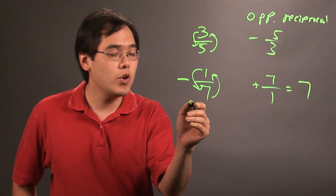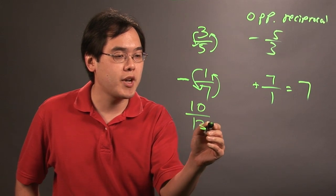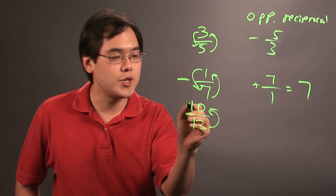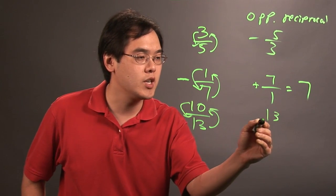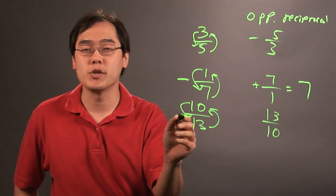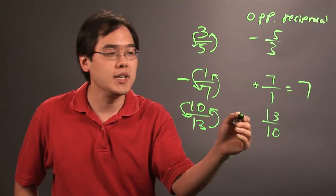So real quickly, if you have 10 over 13, same kind of idea, opposite reciprocal, flip it first, so it'd be 13 over 10. But then because it was positive originally, opposite means negative.